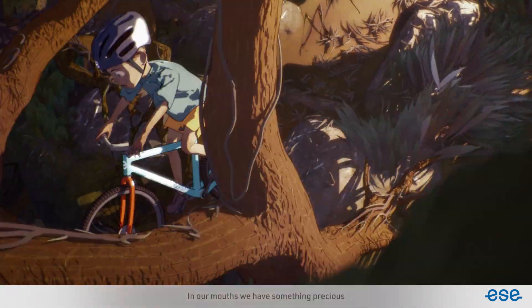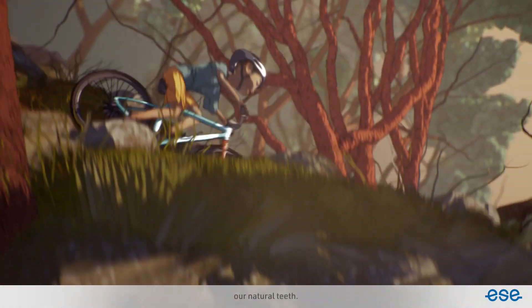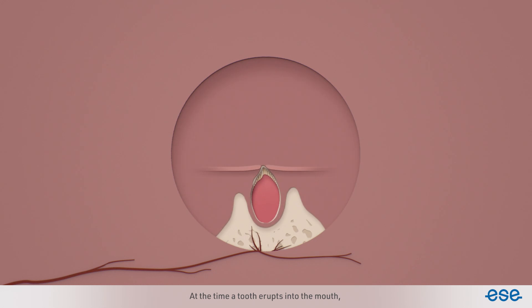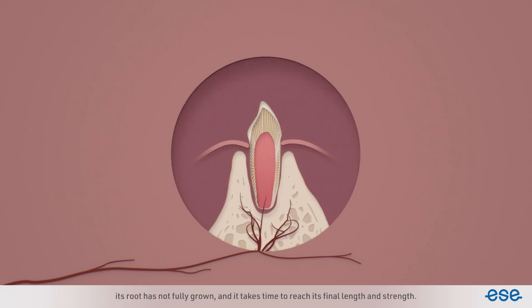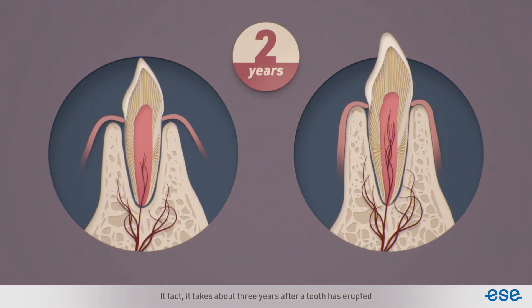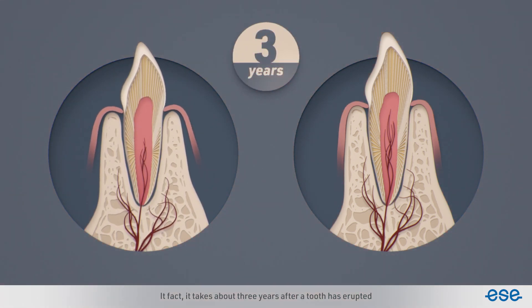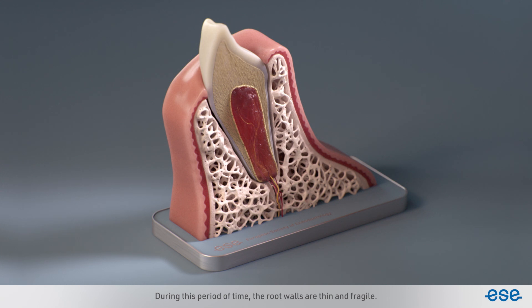In our mouths we have something precious: our natural teeth. At the time a tooth erupts in the mouth, its root has not fully grown, and it takes time to reach its final length and strength. In fact, it takes about three years after a tooth has erupted before root formation is complete. During this period of time, the root walls are thin and fragile.